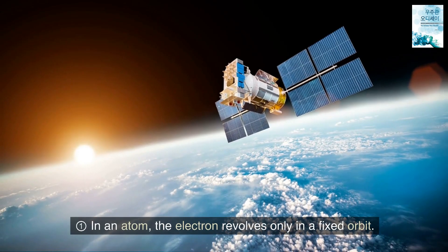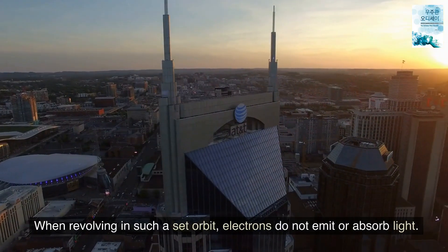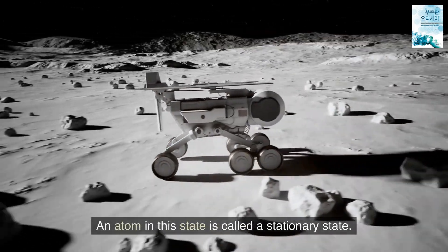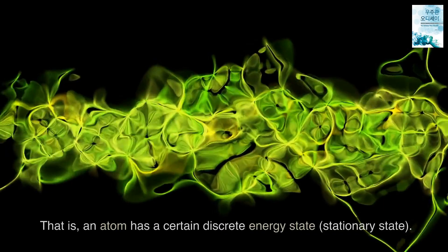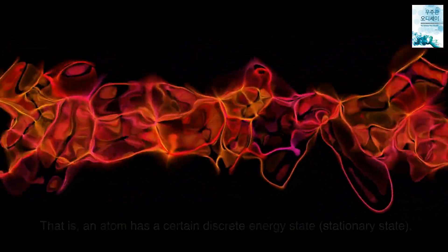One: In an atom, the electron revolves only in a fixed orbit. When revolving in such a set orbit, electrons do not emit or absorb light. An atom in this state is called a stationary state. That is, an atom has a certain discrete energy state, stationary state.